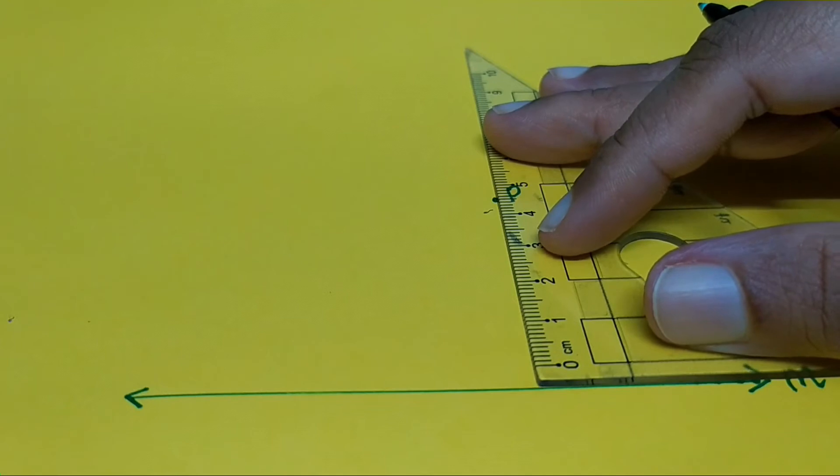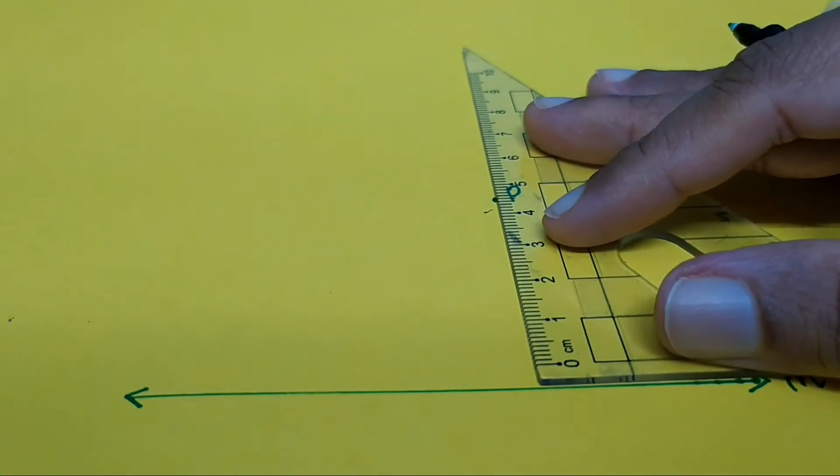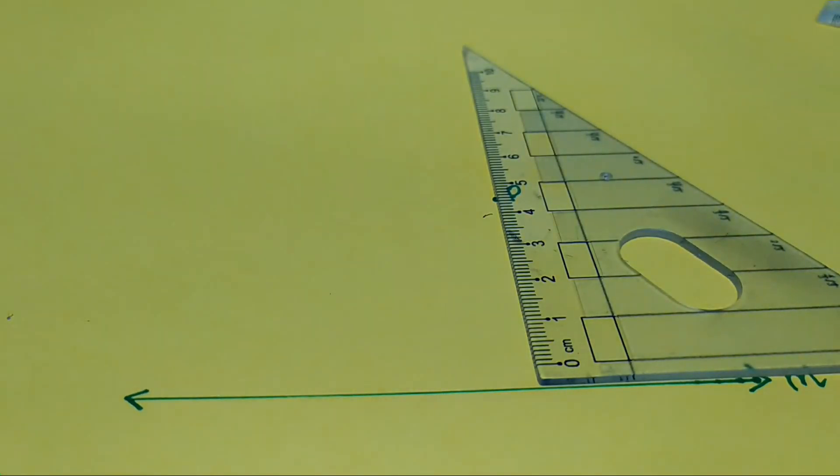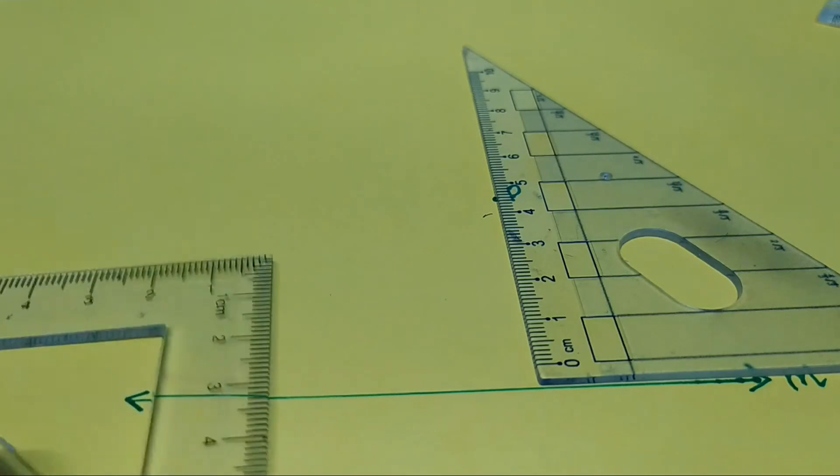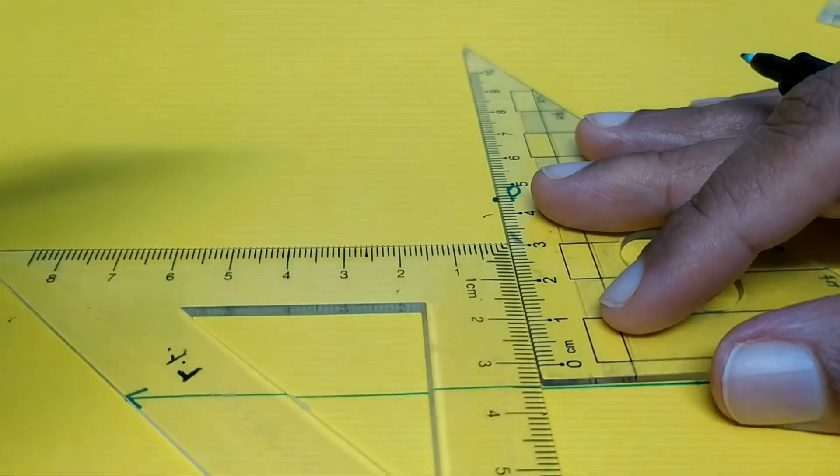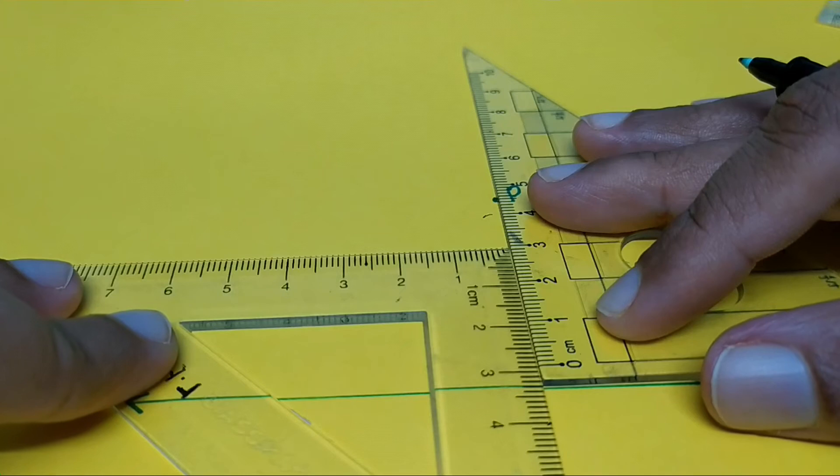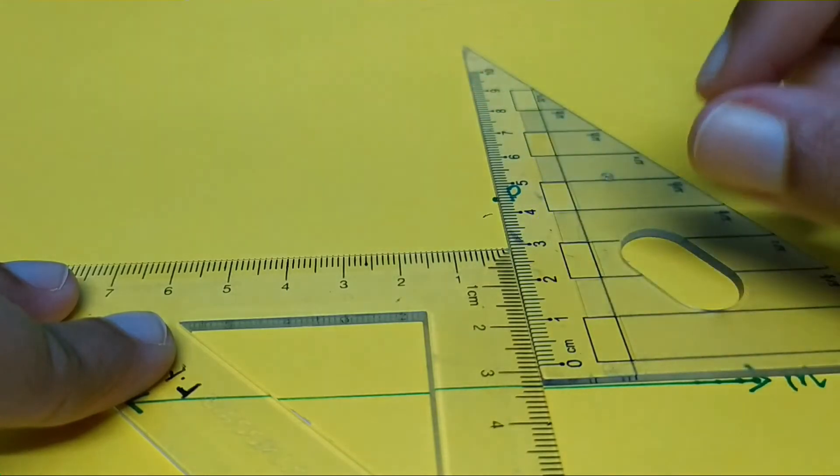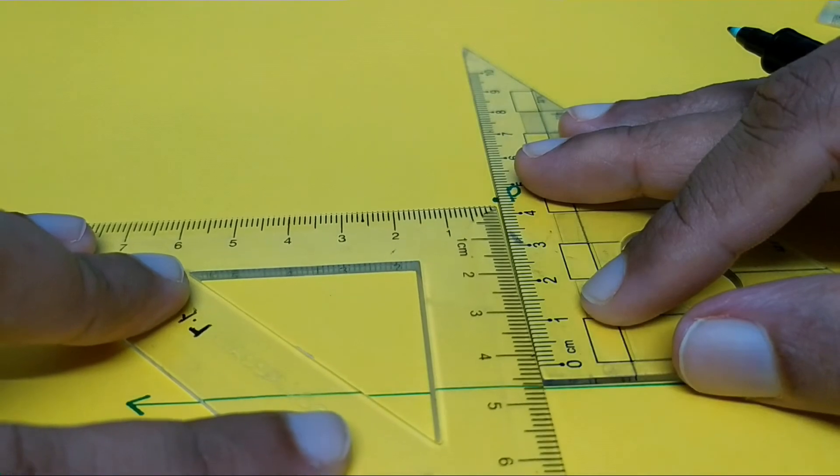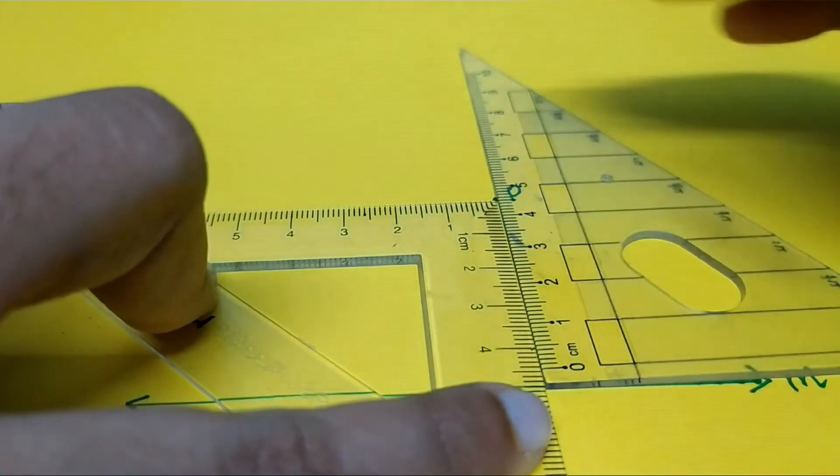Now you take the 45-45-90 set square and place it in the reverse way. Make sure that both the edges are in touch with each other, and slowly drag the other set square right up to point P. The 90-degree angle of this second set square should coincide with point P, and you can now draw a line.